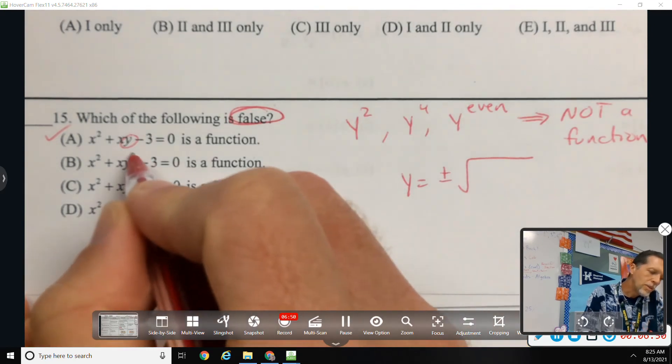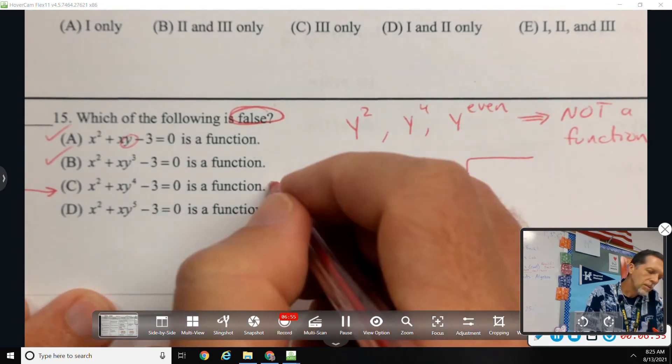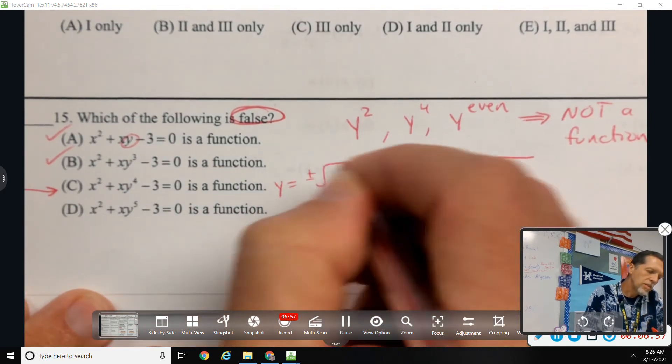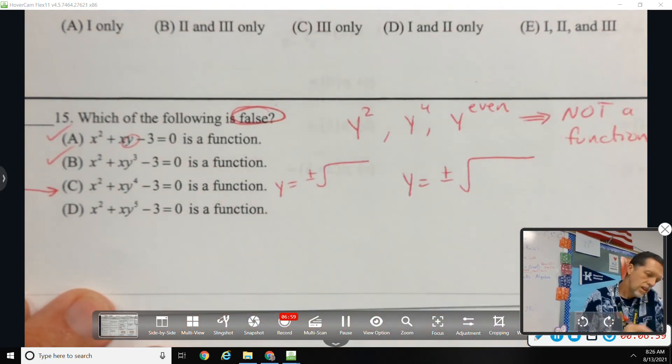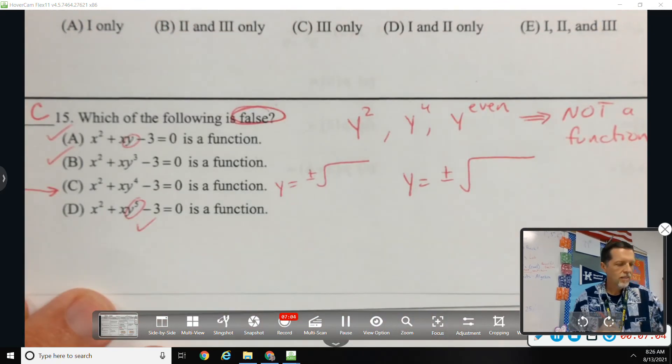Y to the fourth, I think there's our problem because we would end up with plus or minus something. Y to the fifth is fine, so c is the one that's not a function.